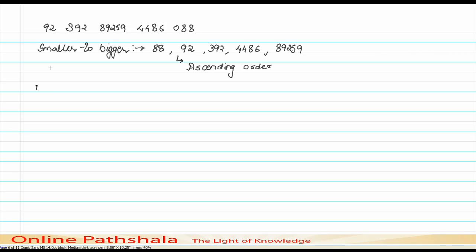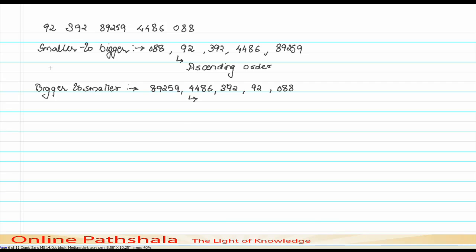Now, what is a bigger-to-smaller arrangement called? If I arrange the same numbers from bigger to smaller, the order would be: 89259, 4486, 392, 92, and then 88. When we arrange numbers from bigger to smaller, we are arranging them in descending order. I hope this is clear to you.